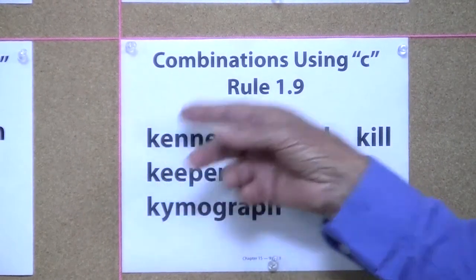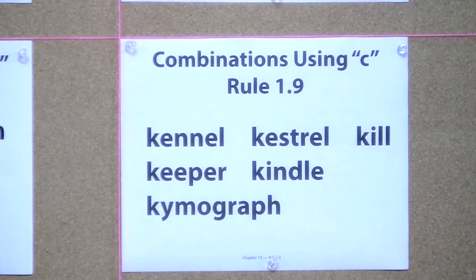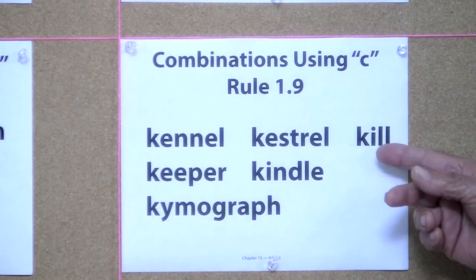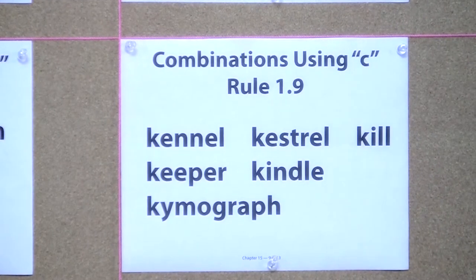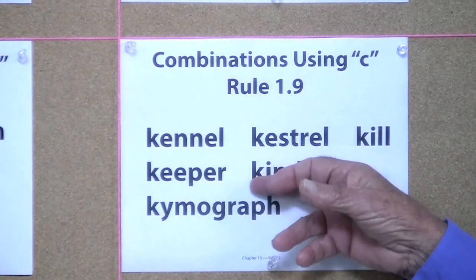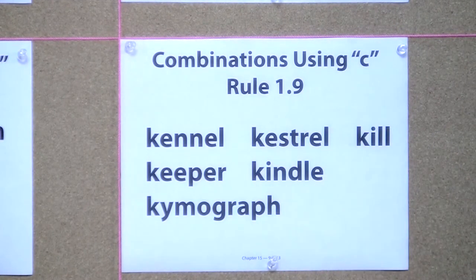Kennel, if it were a C, would have to be senel. And keeper or Kindle would have to be senel. This is the K used because we cannot use a C.